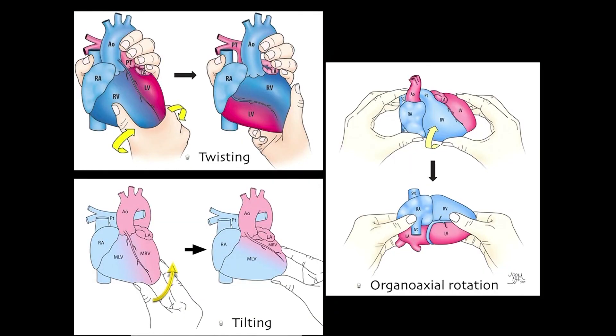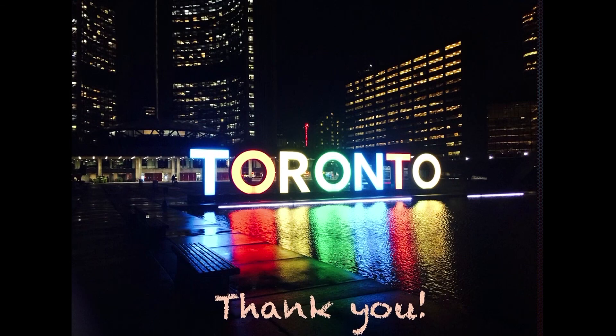So to summarize it, when you have a very abnormal chamber orientation, there are three categories. One is twisting. The other is tilting. The other is organo-axial rotation. If you simply think about this mechanism, and then you might have a far better understanding of the whole pathology. Thank you very much for your attention.